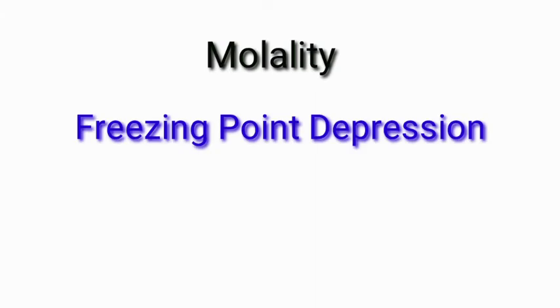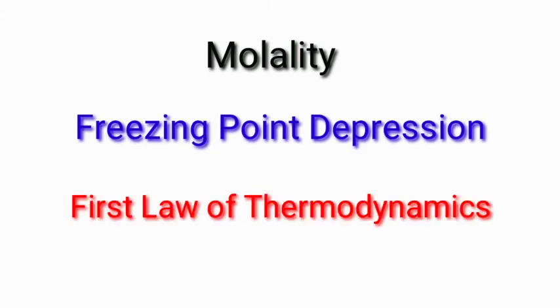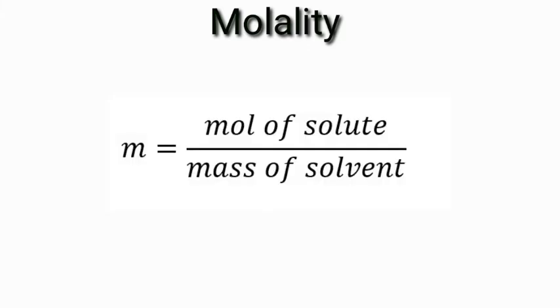In today's video we're going to work some problems about molality, freezing point depression, and the first law of thermodynamics, which is calculating heat, work, and the change in internal energy. Molality is one of the ways to express the concentration of a solution. The equation for molality is moles of solute divided by the mass of solvent in kilograms. There are some cases where the moles of solute or the mass of solvent is not given, so we sometimes need to use additional formulas.